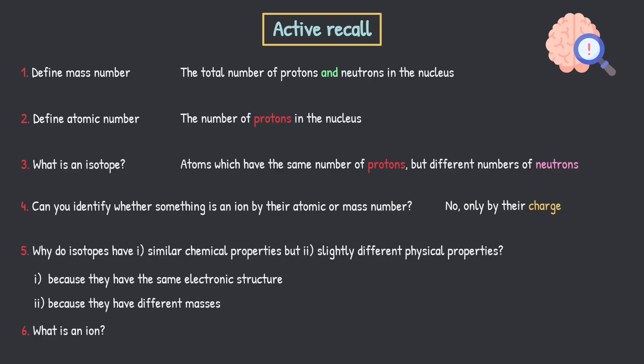Last question: what is an ion? The definition is atoms which have the same number of protons but a different number of electrons. So all six questions done. Hopefully you got most of those right. If you got ones wrong, just take a note of it — why did you get it wrong, what do you find difficult about that concept? Focus on your mistakes and you'll improve drastically. So that's it for the active recall.